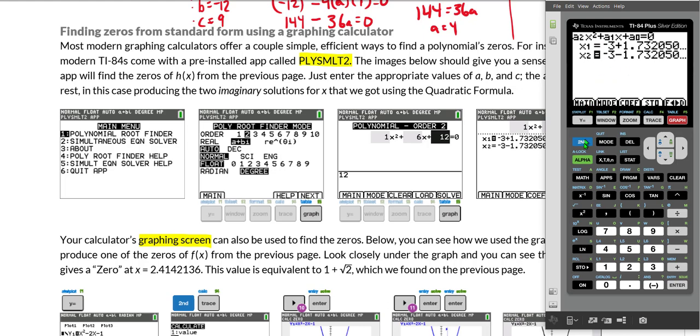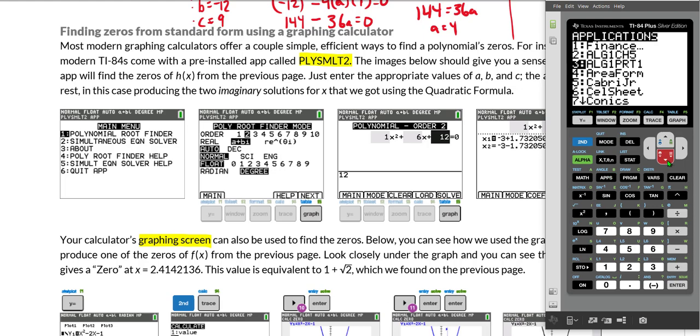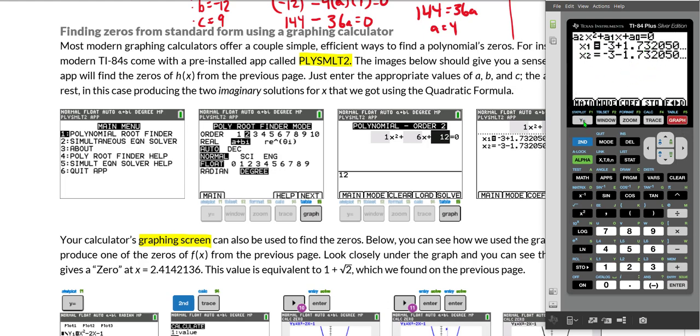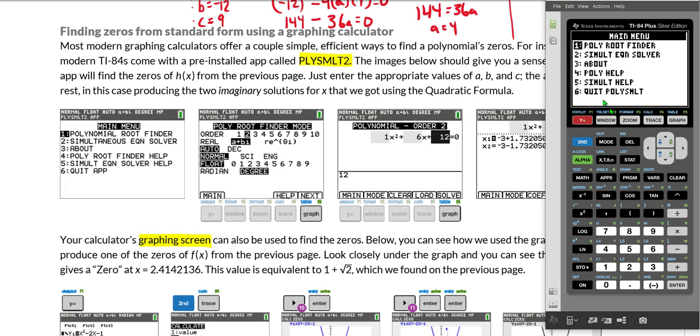To get out of the app, you can keep hitting second and mode, which is your quit button. You can also go to - I'm going to go back into the app so that we - let me go alpha P. And once we are in there, let me get back into this and next and solve. So let's say I'm here and I want to get out of the app. I can hit the main button, which is the main tab, which is my Y equals button, and then number six is quit PolySymult. So I can hit number six and I can get out of there. By the way, if you're ever stuck on a screen in your calculator and you just can't figure out how to get out of that screen, you can always turn your calculator off and back on, and usually that will get you unstuck.